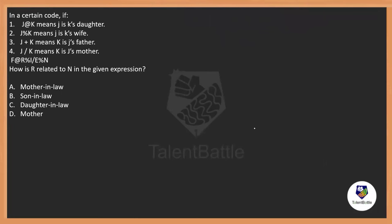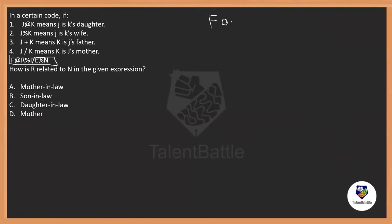Here is a question from the concept of blood relations. These are called equation-based questions where they give you the meaning of symbols: j @ k means j is k's daughter; j % k means j is k's wife; j + k means k is j's father; j ÷ k means k is j's mother. Now they have given us the expression: f @ r % i ÷ e % n.